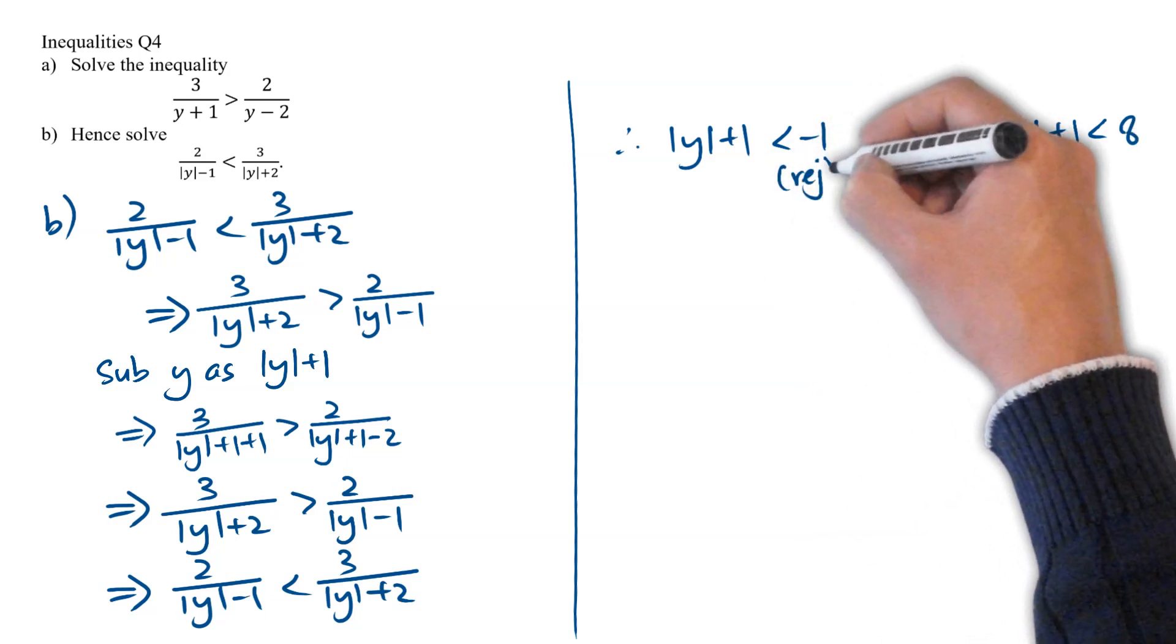And we know that we have to reject mod y plus 1, less than negative 1, because mod y plus 1 is a definitely positive term, and it will never be less than negative 1.